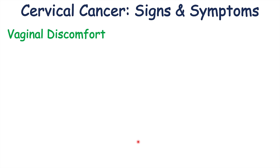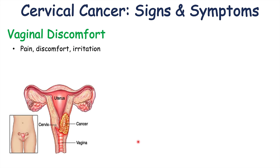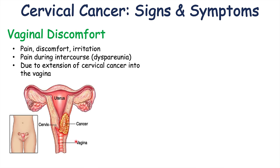Other important symptoms include vaginal discomfort — such as pain, discomfort, or irritation — which can also present as pain during intercourse, known as dyspareunia. So dyspareunia combined with post-coital bleeding can both be findings of cervical cancer. This occurs because the cancer starts to extend past the cervix into the vagina, leading to pain, irritation, and discomfort.